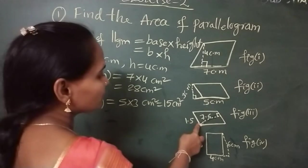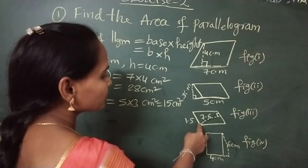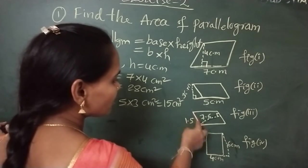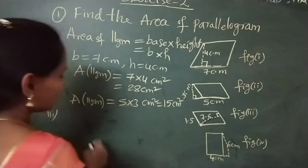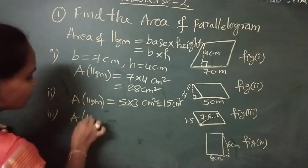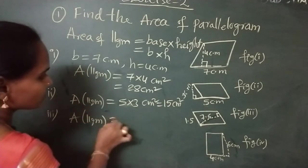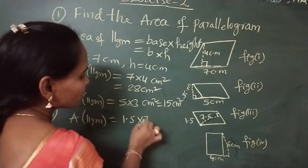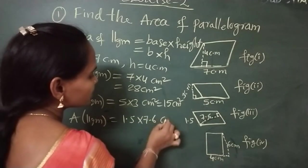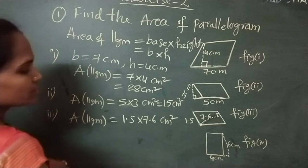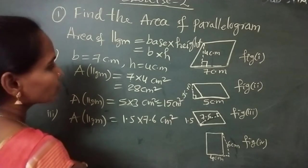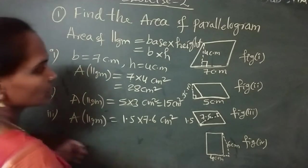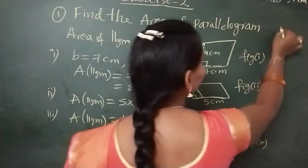Next, the third figure. See the third figure - this is the height of the parallelogram, this is the base of the parallelogram. Now, area of parallelogram: the base of the parallelogram is equal to 1.5 centimeters into 7.6 centimeters. Centimeters into centimeters is centimeters square.